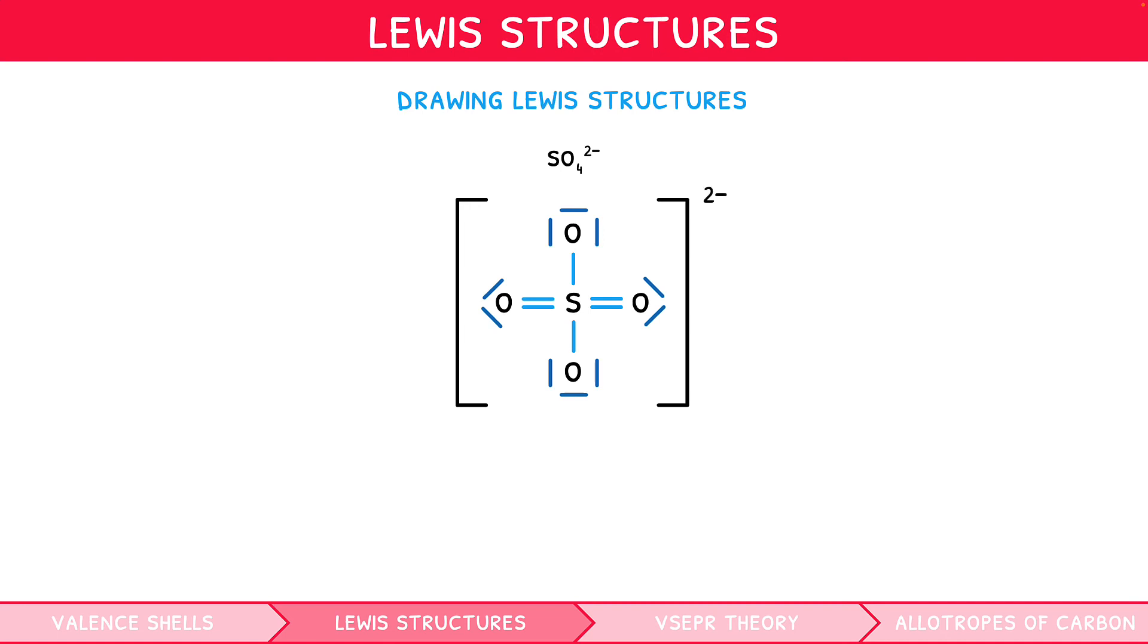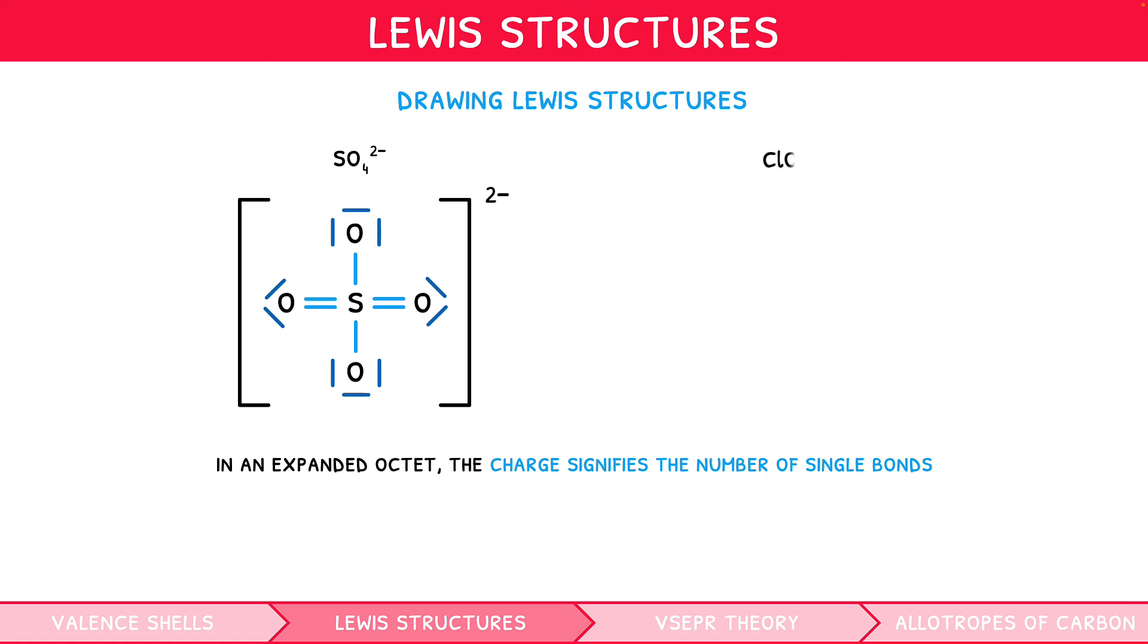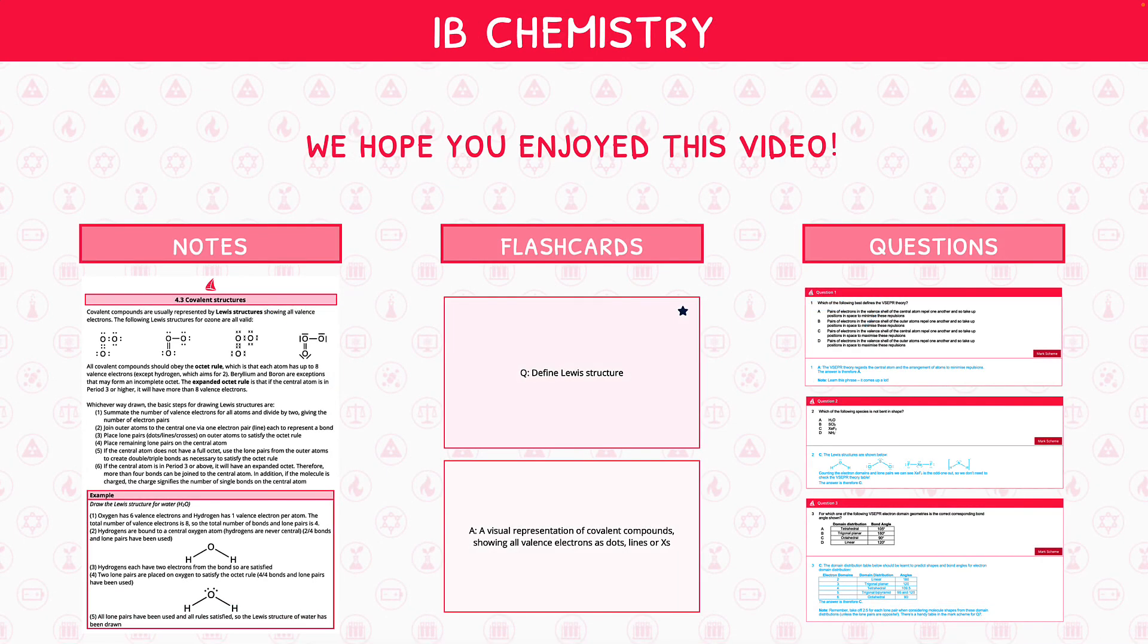You may be wondering why we created only 2 double bonds, instead of 3 or 4. Well, a useful tip is that in a charge structure with an expanded octet, the charge signifies the number of single bonds. I.e. here, 2-, so two single bonds. So, ClO4- would have just one single bond.